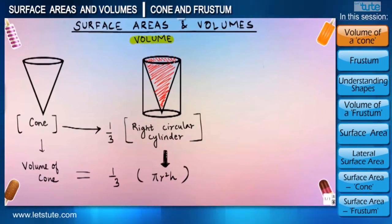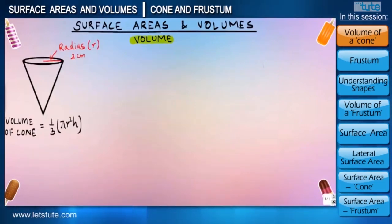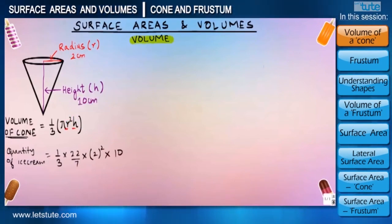So now say if the company decided to use a cone with the radius of 2 centimeters and keeps the height of the cone to be 10 centimeters, then the quantity of ice cream that can be filled to the brim of the cone is actually the volume of the cone itself. So all we have to do is substitute these values of radius and height into this formula 1/3 πr²h and what we'll get is 41.9 centimeter cube, or if we round it up then it is 42 centimeter cube of ice cream.